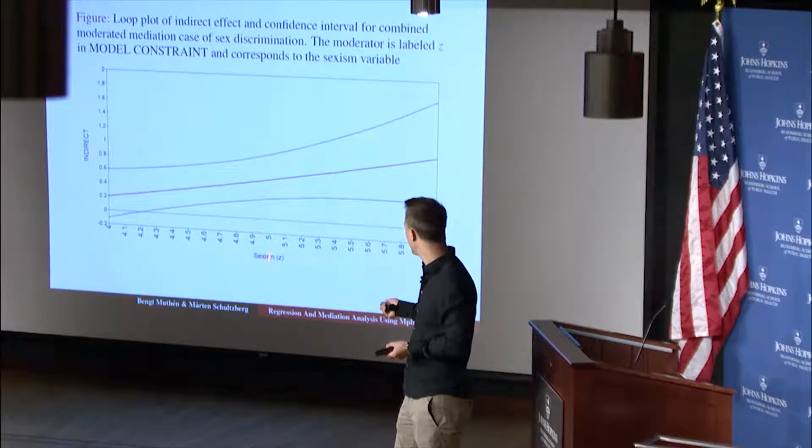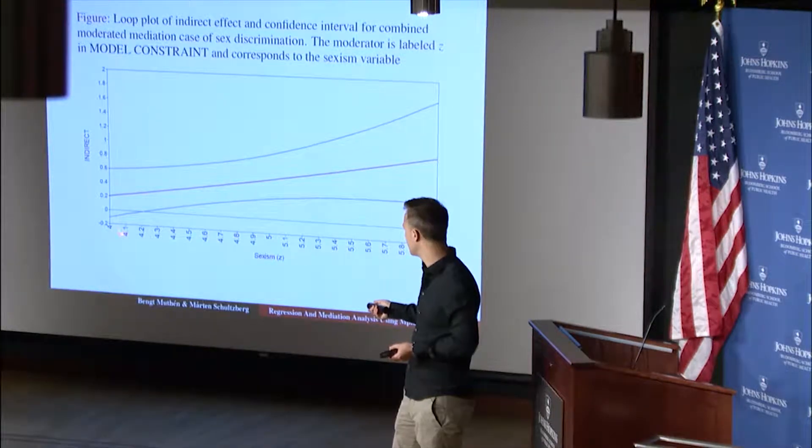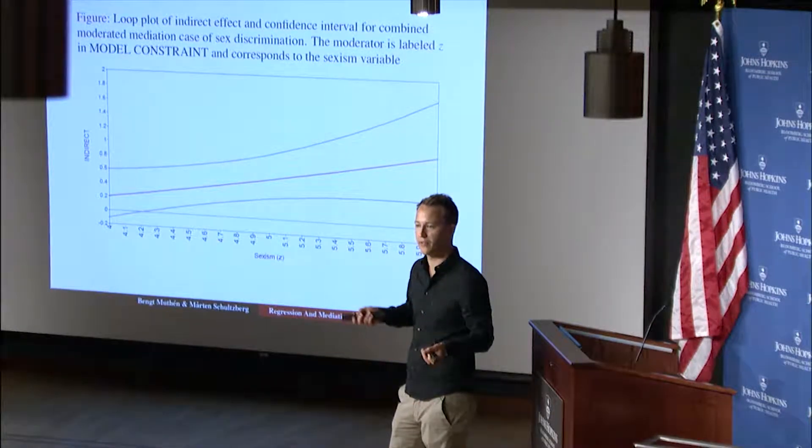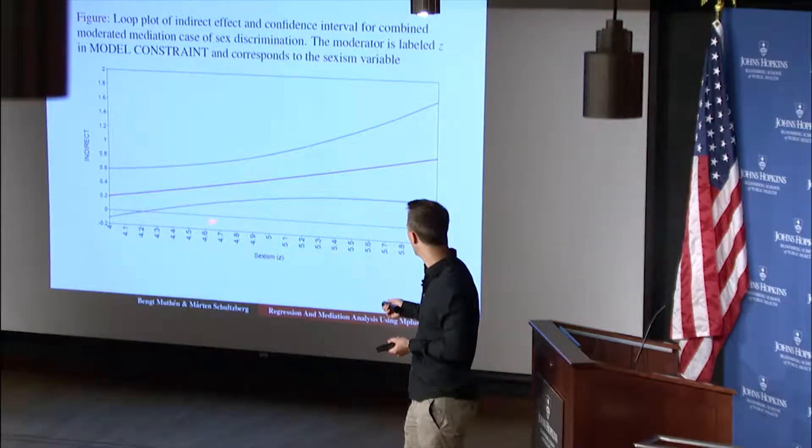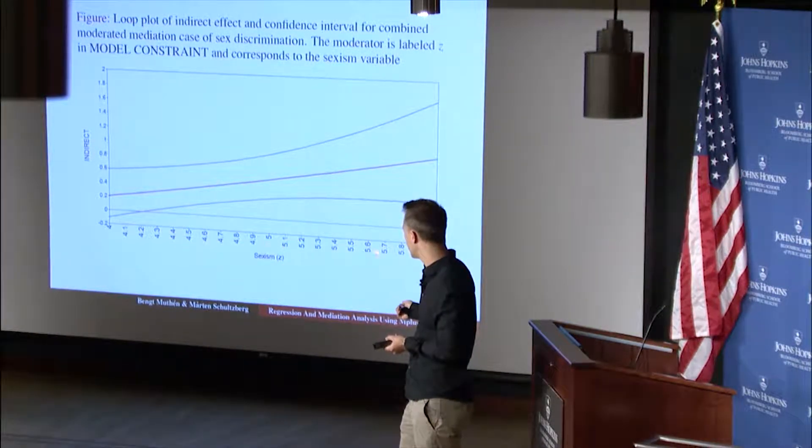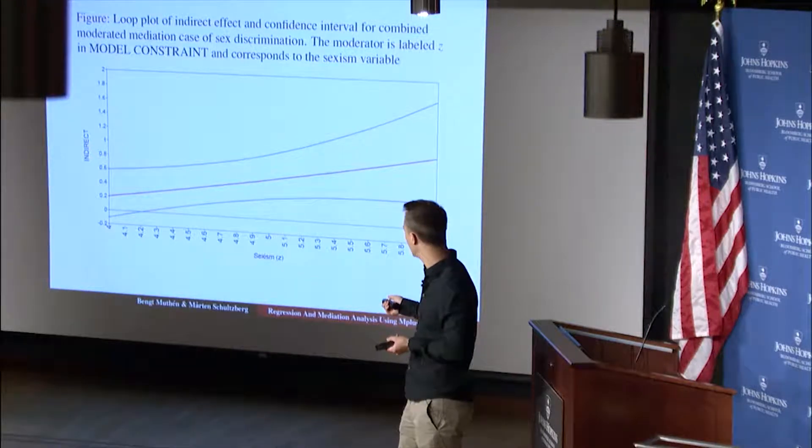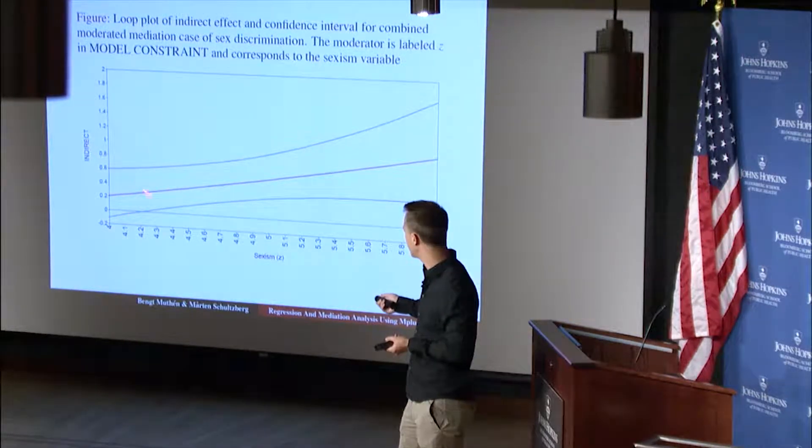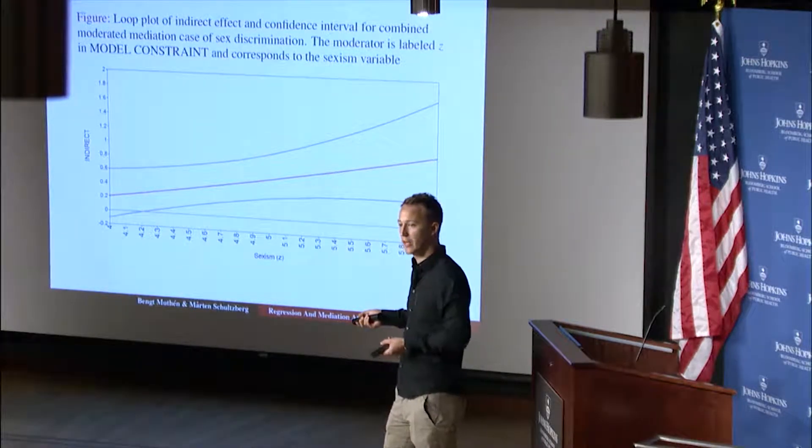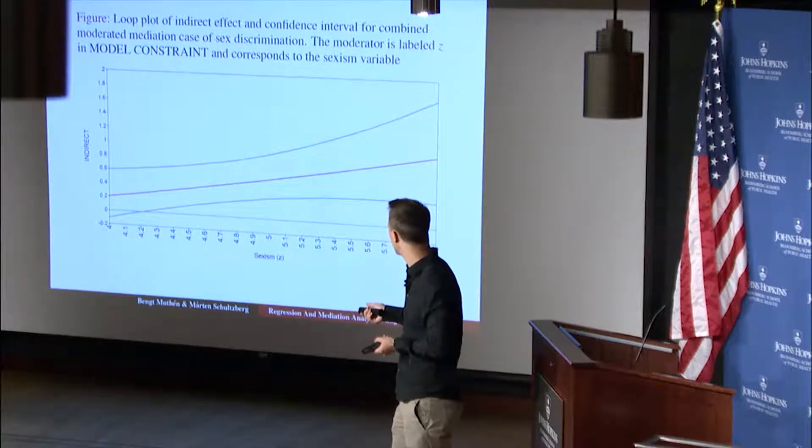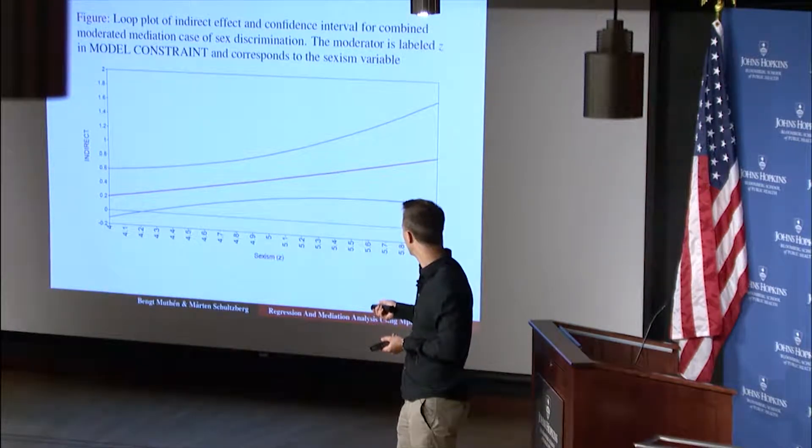So as you can see here, five is the mean of sexism, four and six is the 20th and the 80th percentile of sexism. So you can see that for almost all values of sexism between the 20th and the 80th percentile, the confidence interval of the indirect effect does not cover zero, only for the lower part here, which would explain why it's a significant effect, that we see that significant effect.